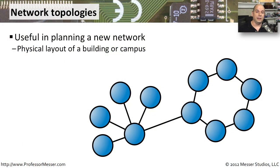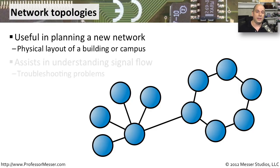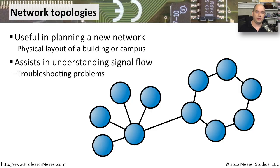In this video, we're going to look at a lot of different kinds of network topologies. This is really useful when you're planning a local network or a wide area network and trying to determine how best to connect different sites together. This can also be used for troubleshooting purposes — if you know which way the data is flowing, it's going to help you if you ever run into any problems.